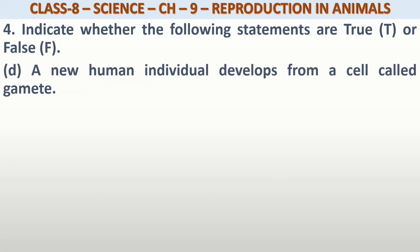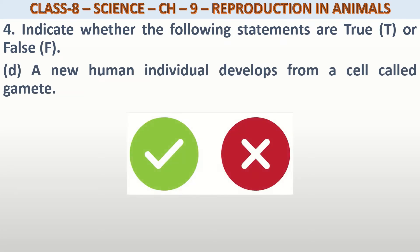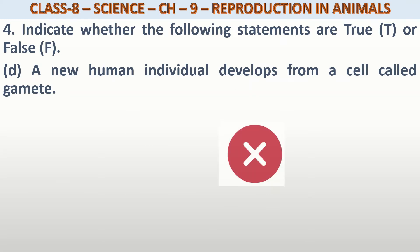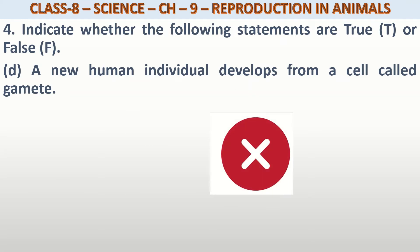A new human individual develops from a cell called gamete. एक नया individual human का बन रहा है, वो किससे बन रहा है? Gamete से बन रहा है? No, this is wrong. Male और female gamete जब fuse होते हैं, तो zygote बनता है, और उस zygote से नया individual develop होता है — not from the gamete.